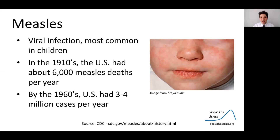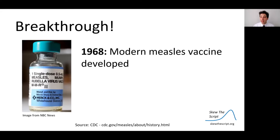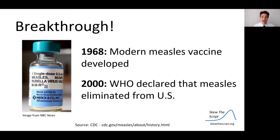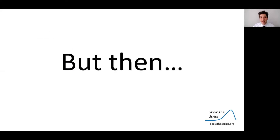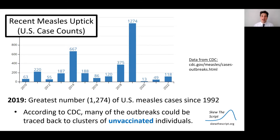Measles is a viral infection most common in children. In 1910, the United States had about 6,000 measles deaths per year. By the 60s, the US had about 3 to 4 million cases per year. But in 1968, the modern measles vaccine was developed, and by the year 2000, the WHO declared measles eliminated from the United States. Recently, we've seen an uptick — 2019 had the greatest number of measles cases since the early 1990s. According to the CDC, many outbreaks could be traced back to clusters of unvaccinated individuals.